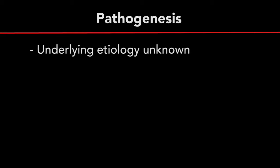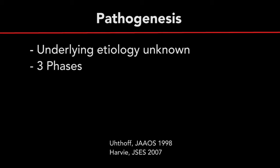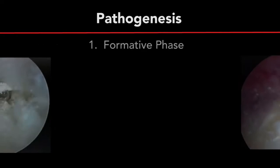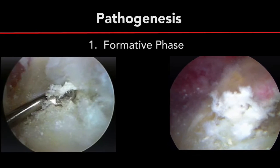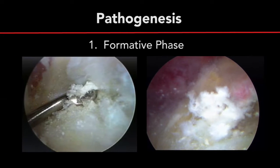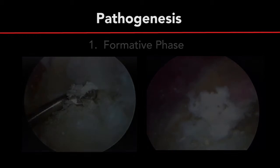While the underlying etiology is unknown, the pathophysiology is thought to occur in three distinct phases. First, in the formative phase, cell-mediated calcification occurs where calcium crystals are deposited into matrix vesicles. During this phase, patients are generally asymptomatic.